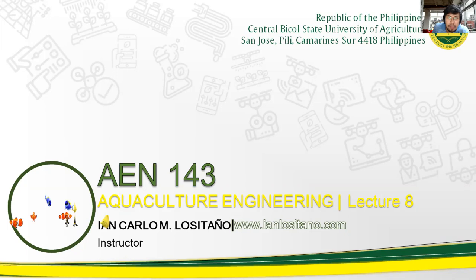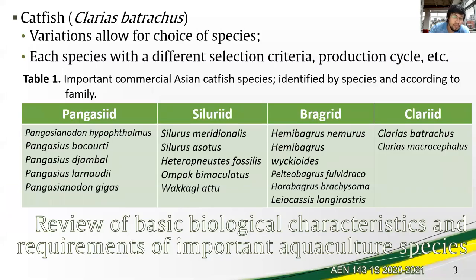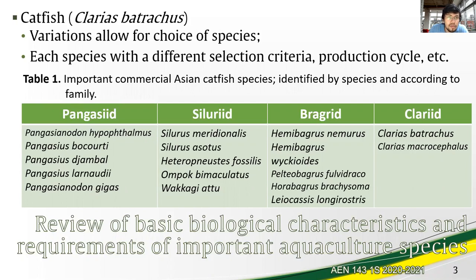We'll be tackling the Clarias batrachus species, as there are many catfish species out there. Even the Pangasius breed that we have been talking about is actually a catfish species. We'll go directly to the selection criteria and characteristics, after which is the production cycle. There are particularly four families of concern in the catfish production system: the Pangasid, the Silurid, the Bragid, and the Clarid.